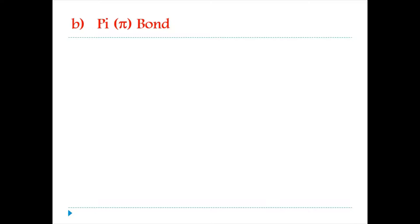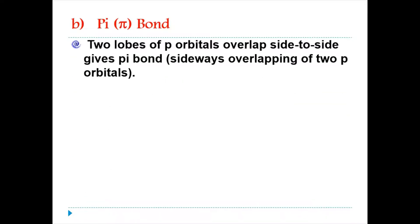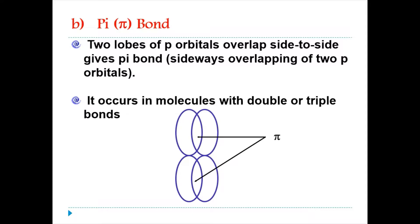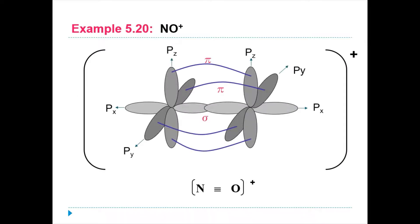Now, what is pi bond? There are two lobes of P orbitals overlapped side-to-side would give pi bond. This is a sideways overlapping for two P orbitals. This occurs in molecules with double or triple bond. You can see that the two P orbitals overlapped side-to-side. Those two areas that overlap we labeled as pi bond. This is an example of the occurrence of pi bonds. Two pi bonds for the molecule of NO+ which is having a triple bond.